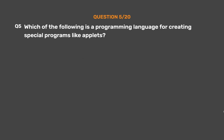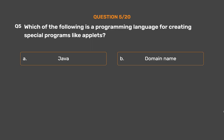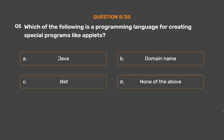Question number 5. Which of the following is a programming language for creating special programs like applets? Option A: Java. Option B: Domain Name. Option C: Dot Net. Option D: None of the above.